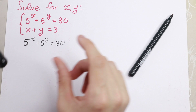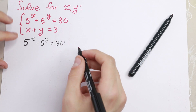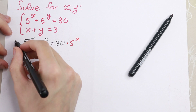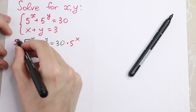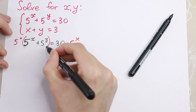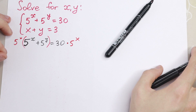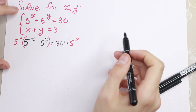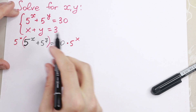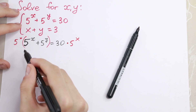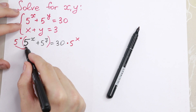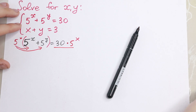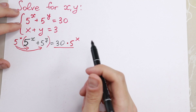I want to multiply both sides by 5 to the power x. Let's multiply by 5 to the power x on both sides, but right here we need to put parentheses. So what are we going to do next? Let's multiply this 5 to the power x by these elements — by 5 to the power x and 5 to the power y — and right here we keep the same.